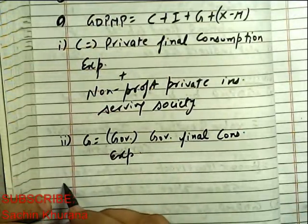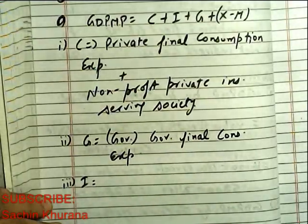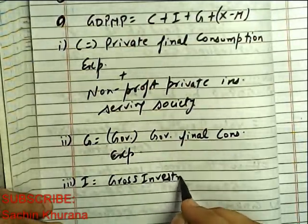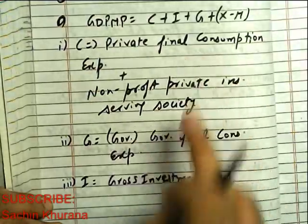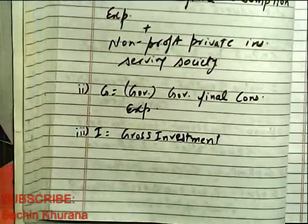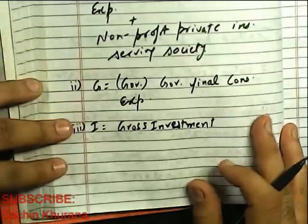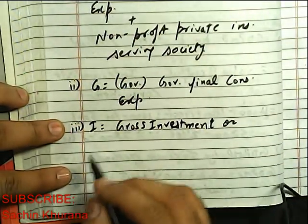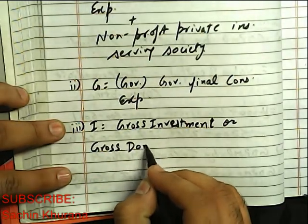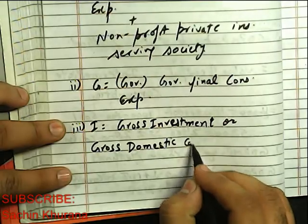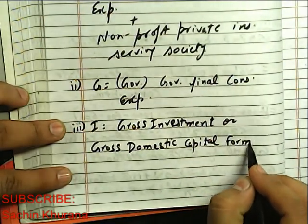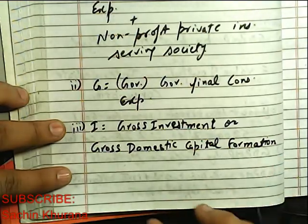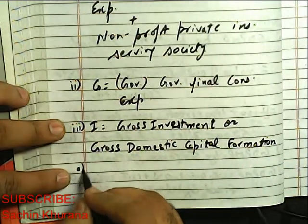The third component is I, which is Gross Investment. Note that the government makes both C and I types of expenditure — both kinds. I is also written as Gross Domestic Capital Formation. Gross Domestic Capital Formation has several parts.